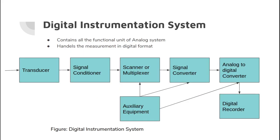Now we have the digital instrumentation system. The functional unit of the analog instrumentation system consists of input, signal processing, and output. In the case of the digital instrumentation system, there are a few extra elements, which is why we are covering it as a separate topic. It contains all the functional elements of the analog system, and since it handles all measurements in digital format, it requires some extra devices.